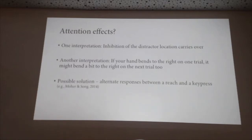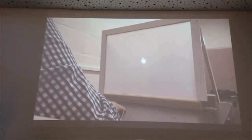One possible solution to disentangle those two explanations is to alternate responses between a reach and a key press. We cued people on each trial whether they were going to point to a target or press a key in response to a target. We use that task because it involves focal attention in the same way as pointing. We ensured participants were doing what they were supposed to: on hand trials they can't touch a key, and on keyboard trials any hand movement gets a warning and that trial is thrown out.